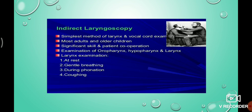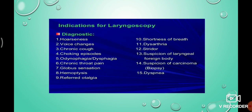To summarize direct laryngoscopy: it involves direct visualization of the larynx and hypopharynx. Indirect laryngoscopy is the indirect examination of the larynx and is the simplest method of larynx and vocal cord examination. Most adults and older children can use this method, but significant skill and patient cooperation are needed. Through this, we can examine the oropharynx, hypopharynx, and larynx. A laryngeal mirror is used — warmed and tested on the back of the hand, then introduced into the mouth and held firmly against the uvula and soft palate.